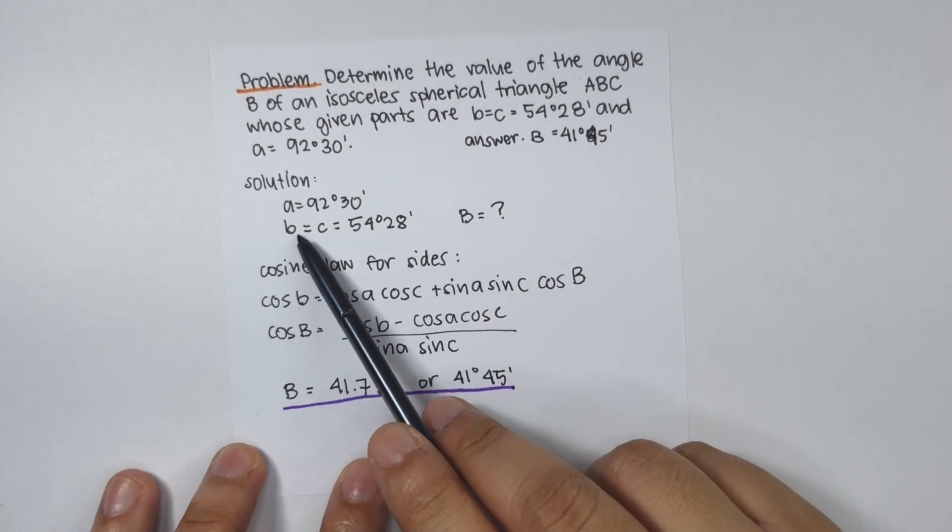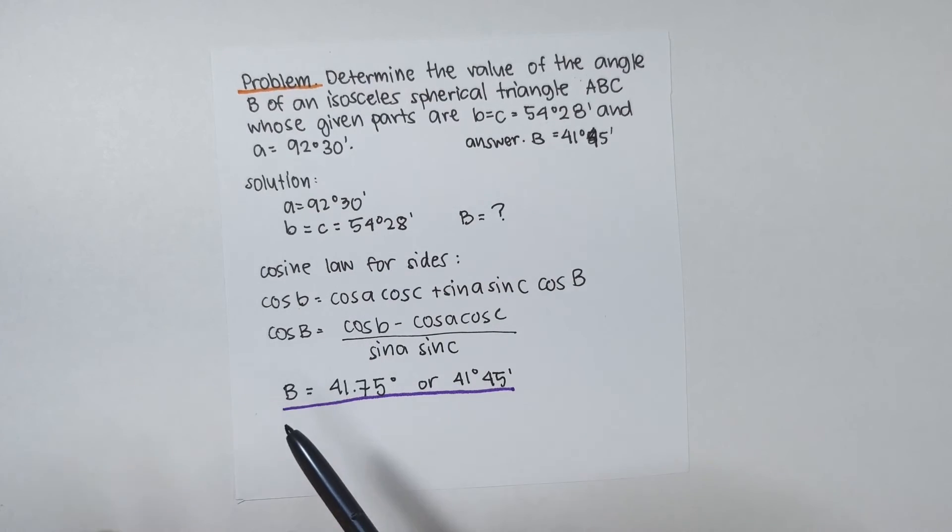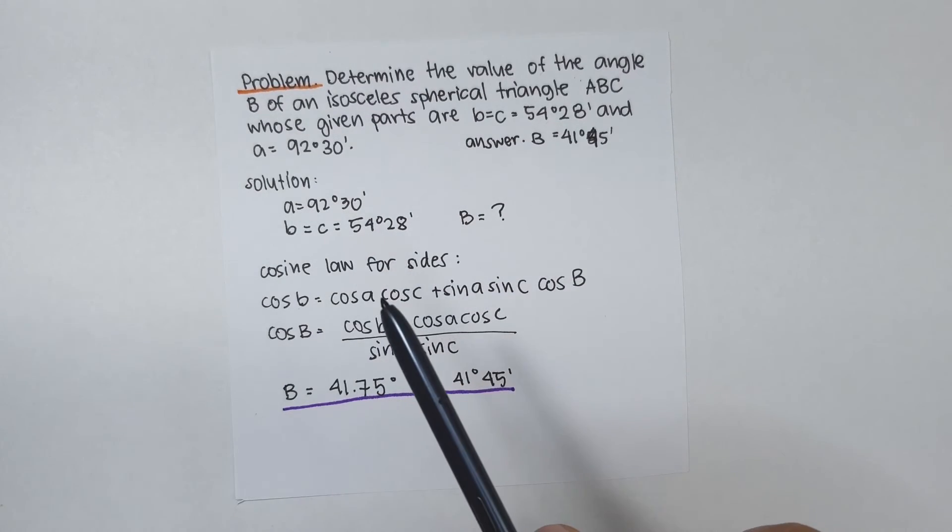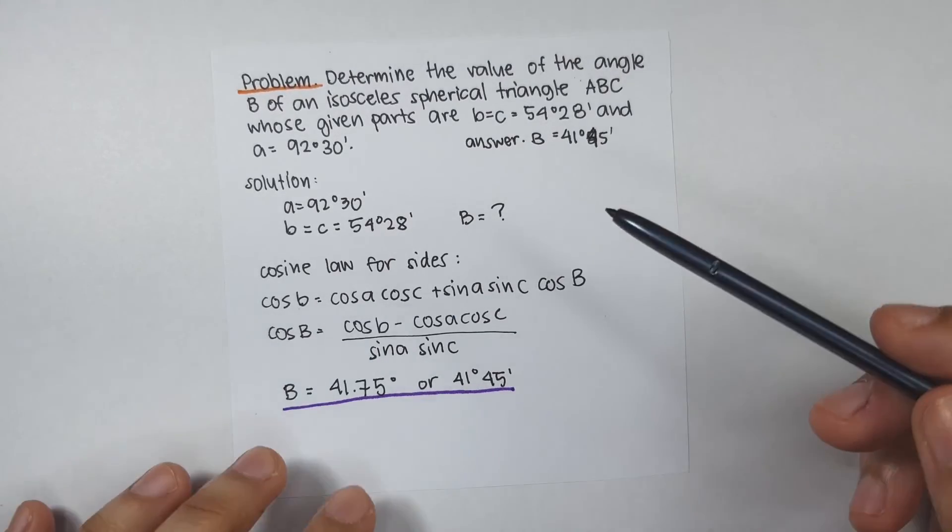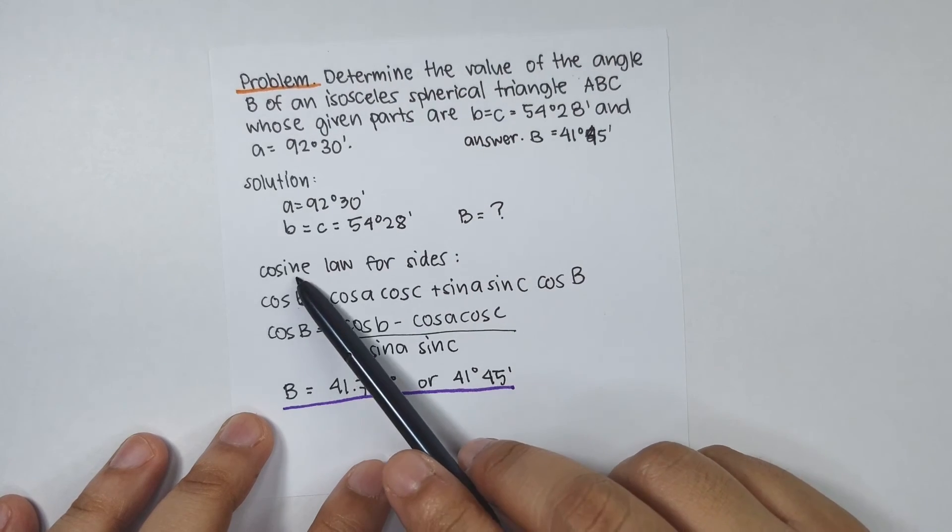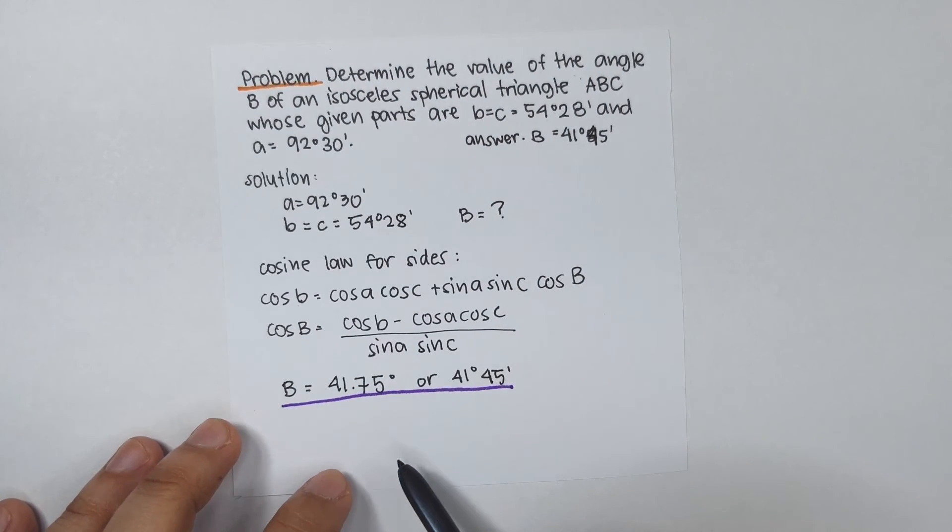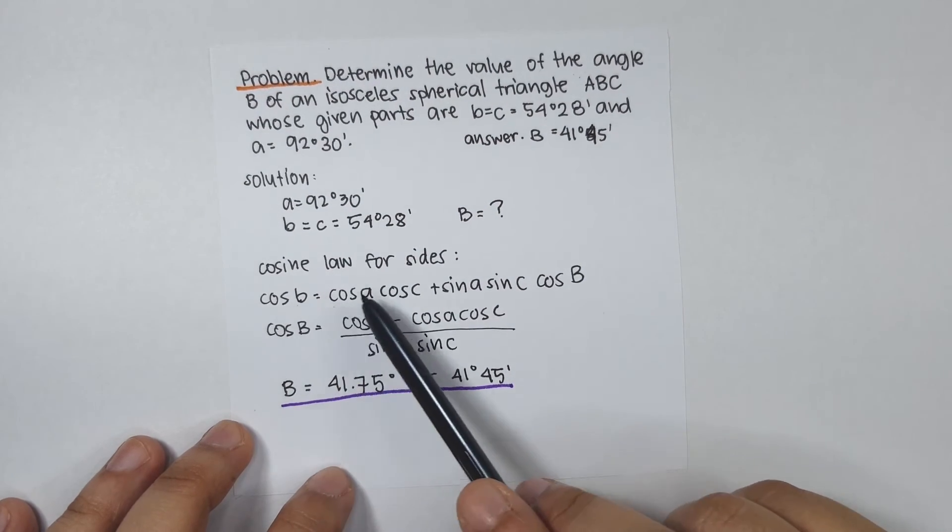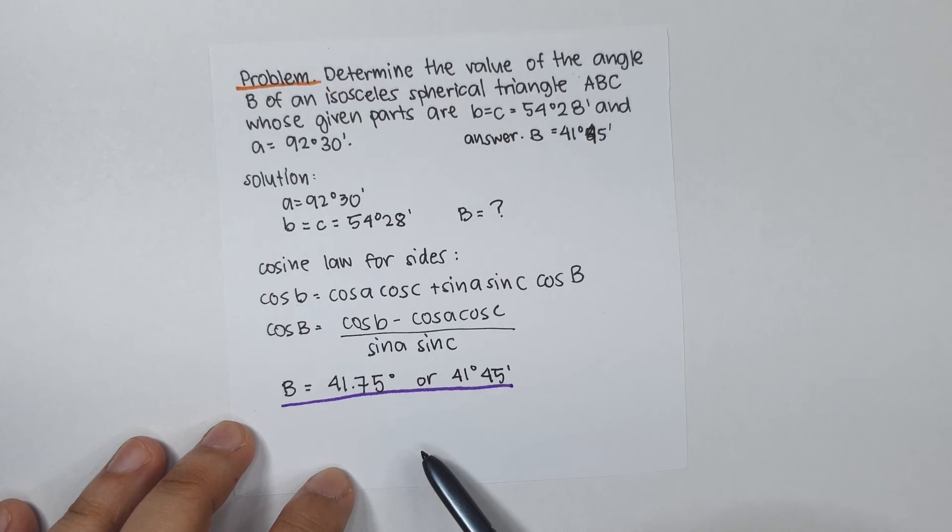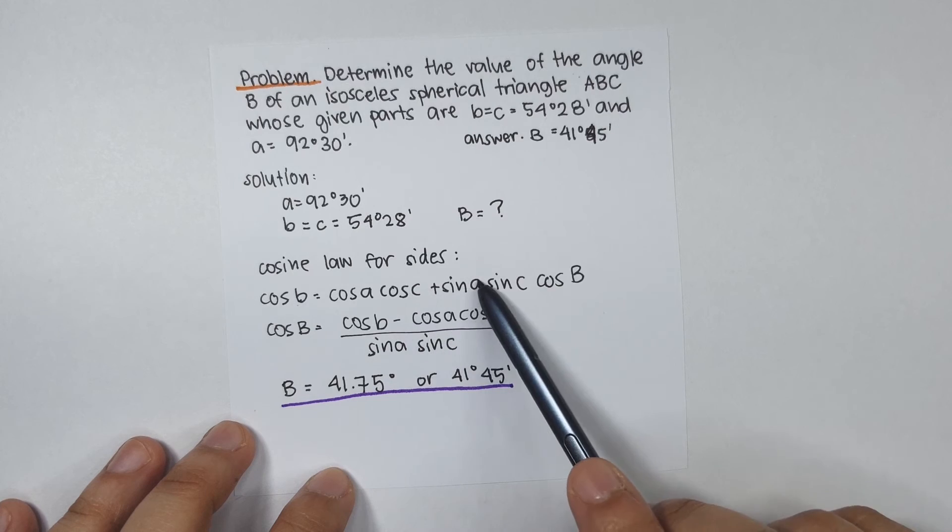So, this is our solution. B and C are both 54 degrees 28 minutes. Side A is 92 degrees 30 minutes. We know all three sides and we only have to solve one angle. So, we can use the law of cosines for sides in this problem. That is, cos B is equal to cos A cos C plus sin A sin C cosine angle B. So, cos cos sin cos.